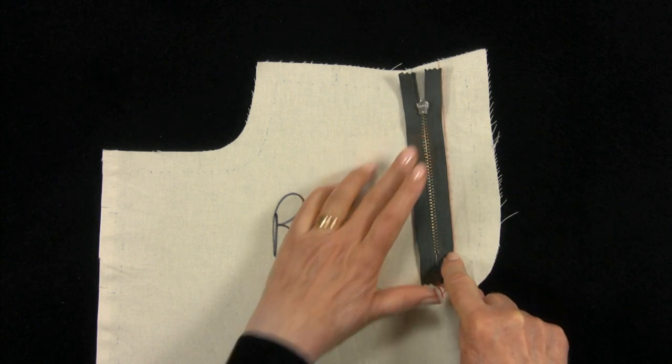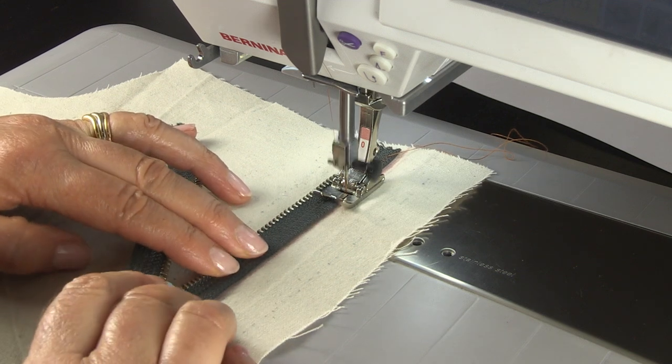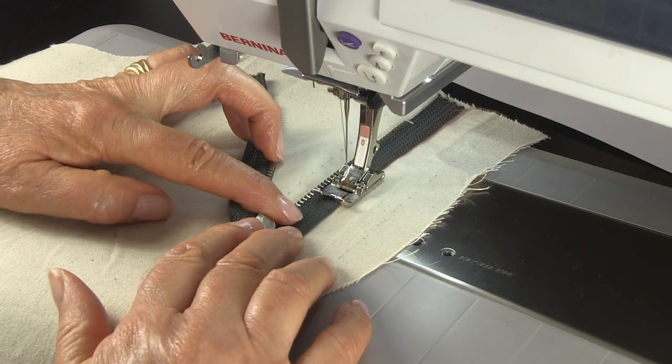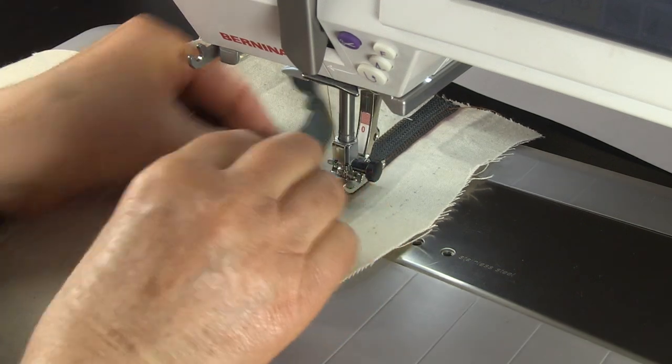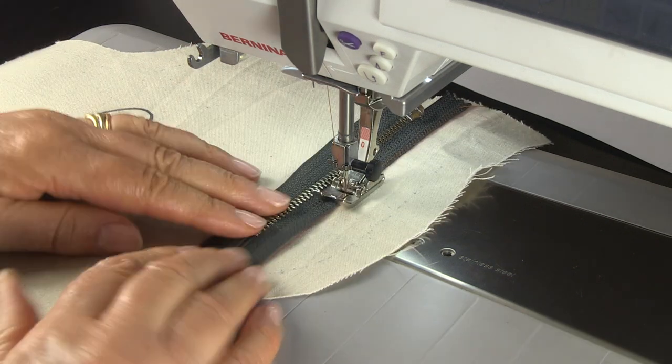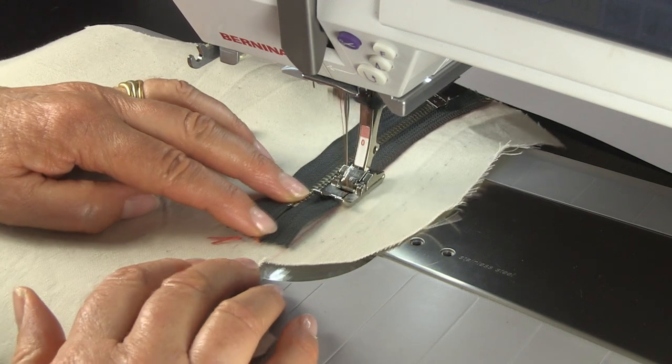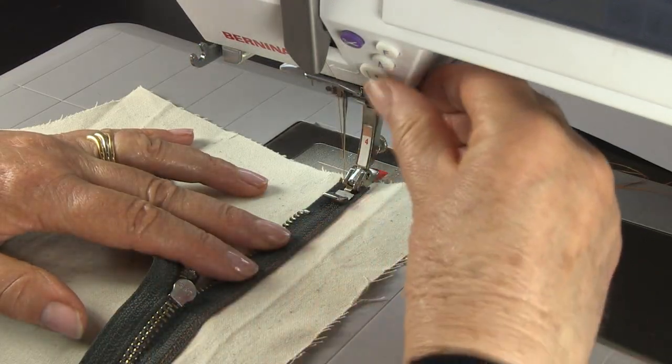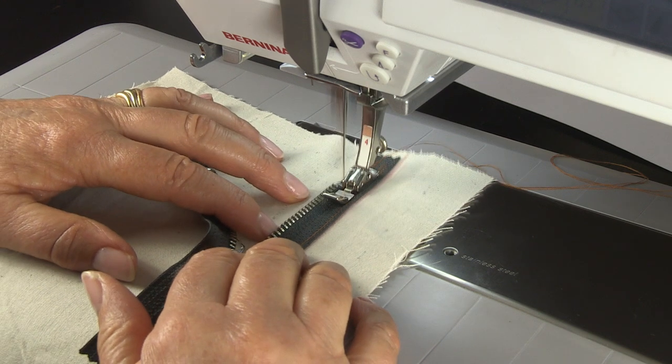At the machine, lay the zip face down with the right hand tape along the chalked line. Machine along the edge of the tape. Stop to slide the zip pull past the needle. Change to a zipper foot with the needle moved to the left. Then stitch another row close to the teeth.